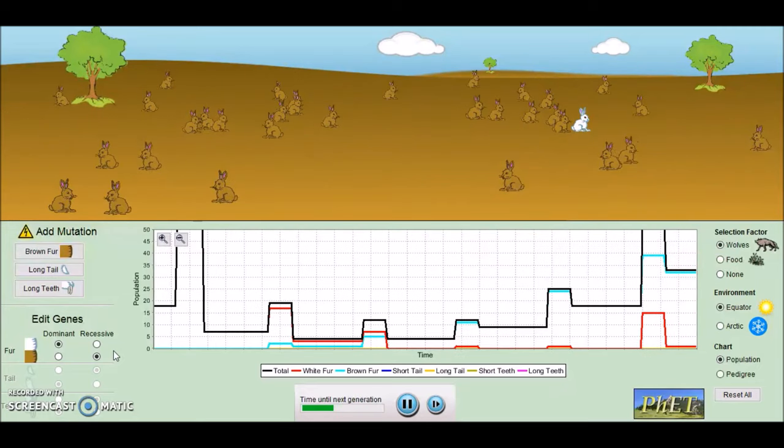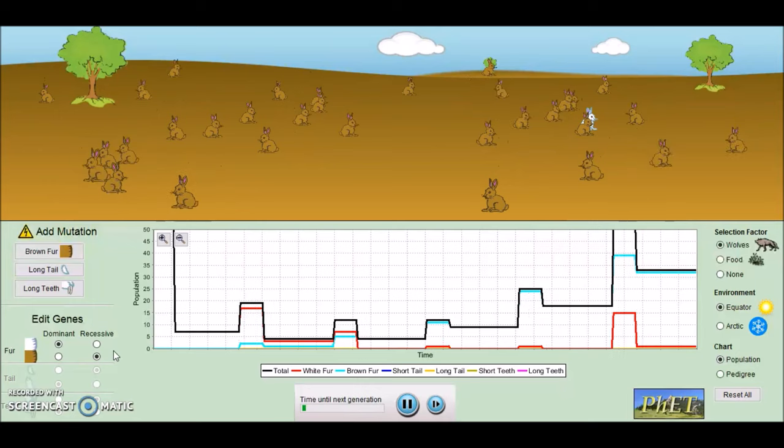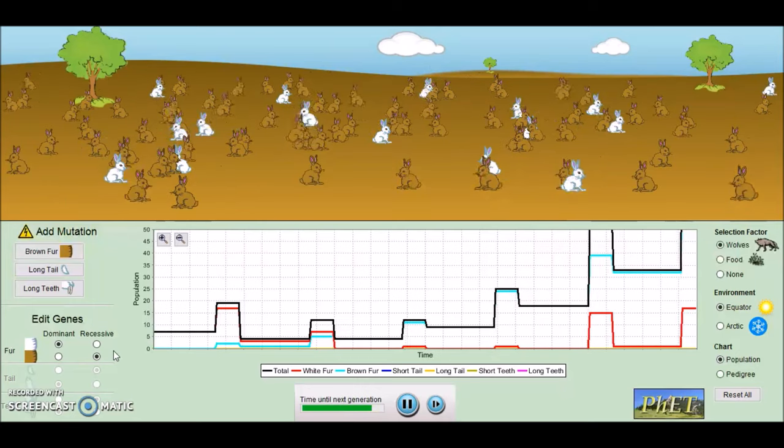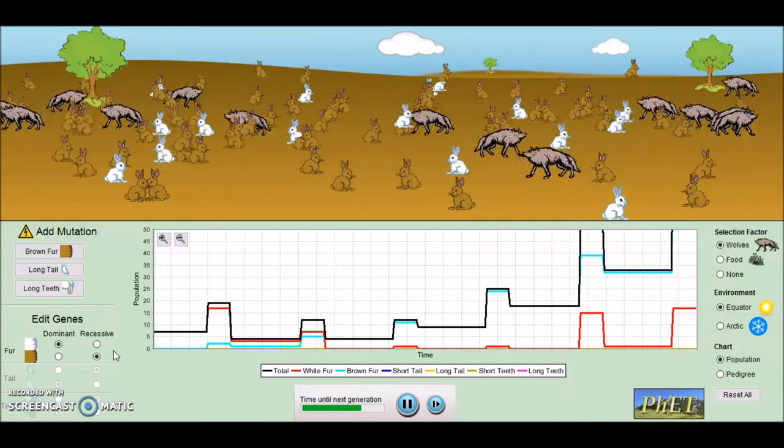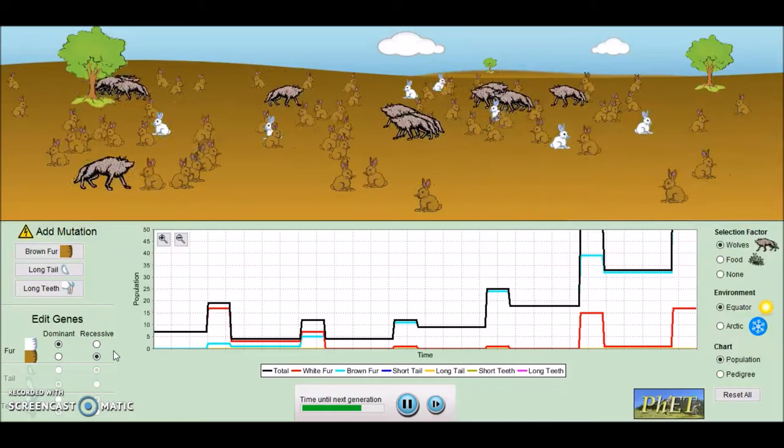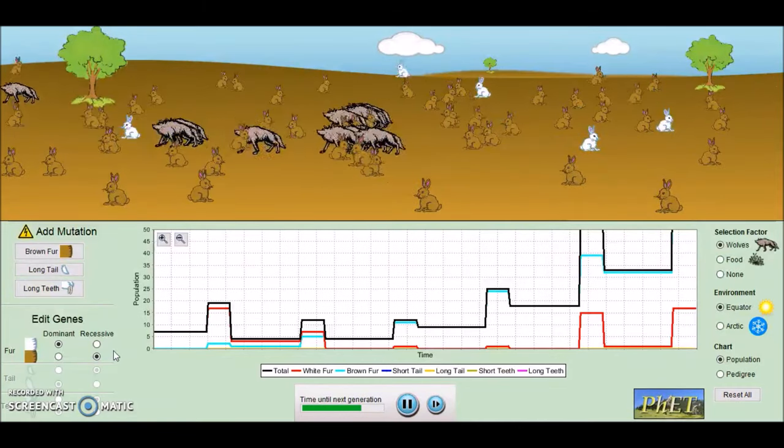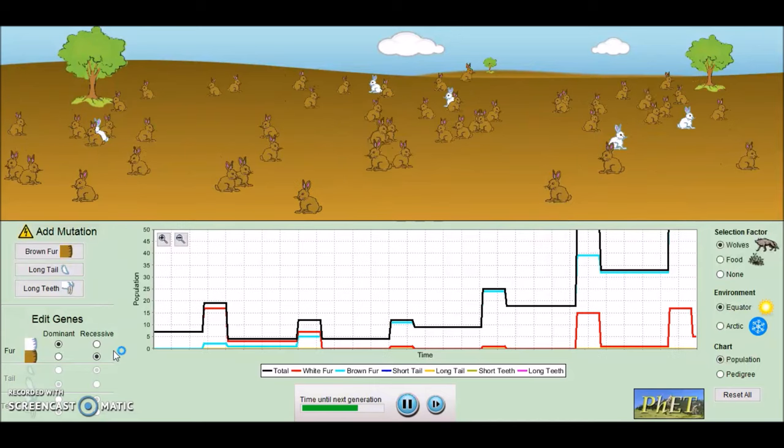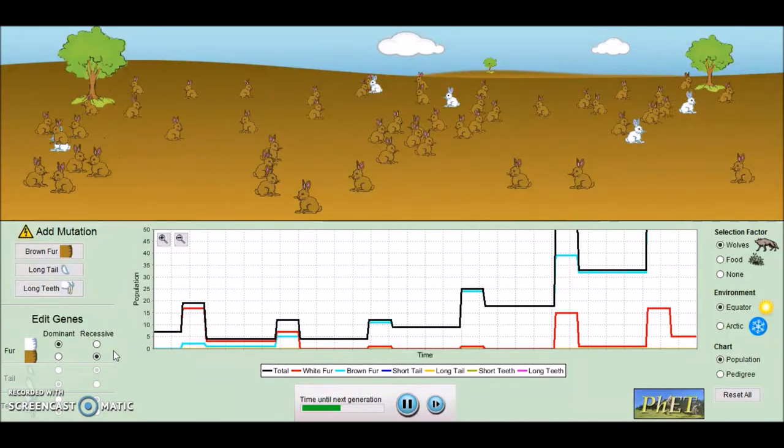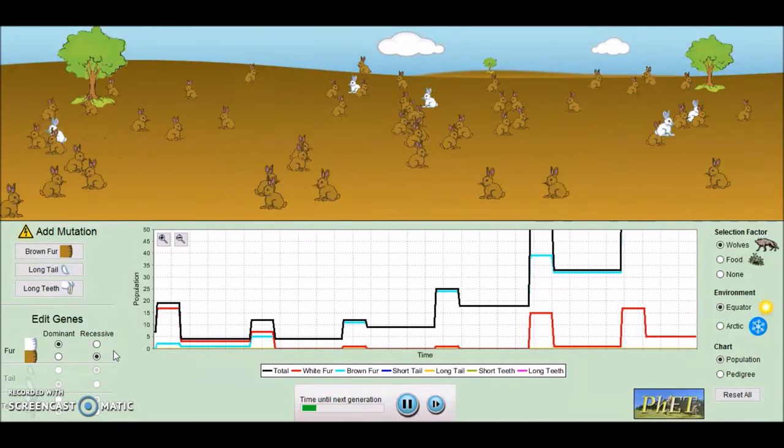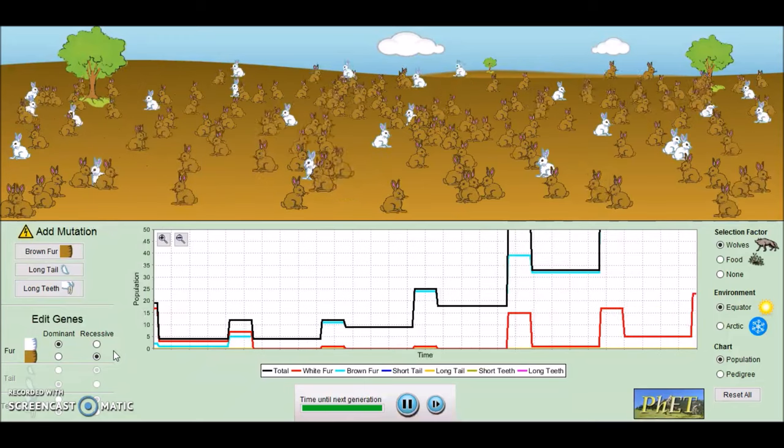Now, we're still going to see a lot of brown bunnies because quite a lot of these bunnies are going to have two copies of the recessive gene. But we're going to see these white bunnies being taken over even though those are the ones that are being eaten by the wolves.